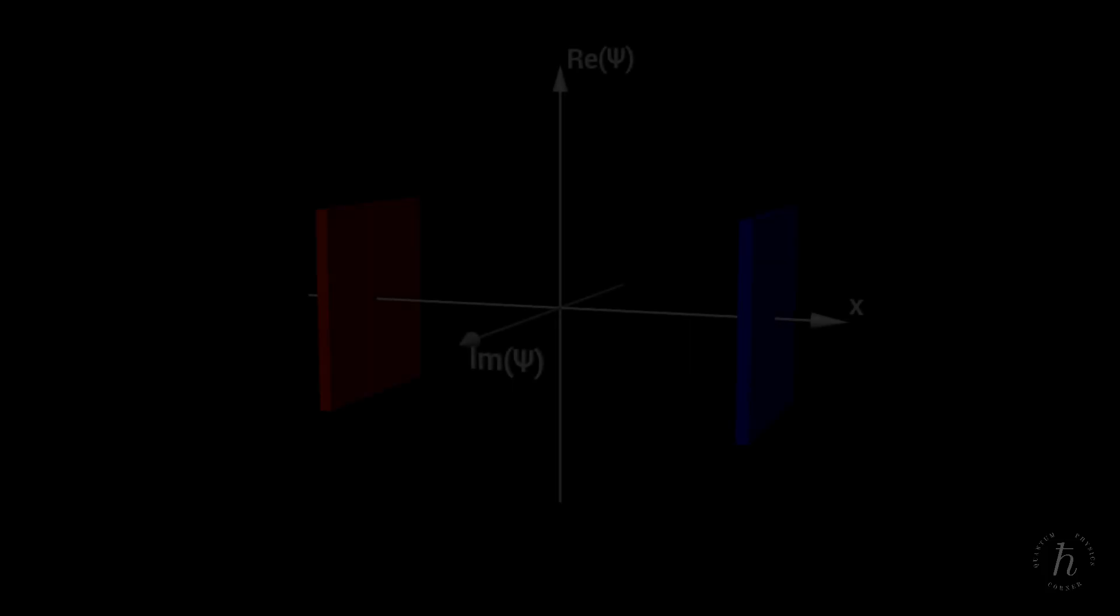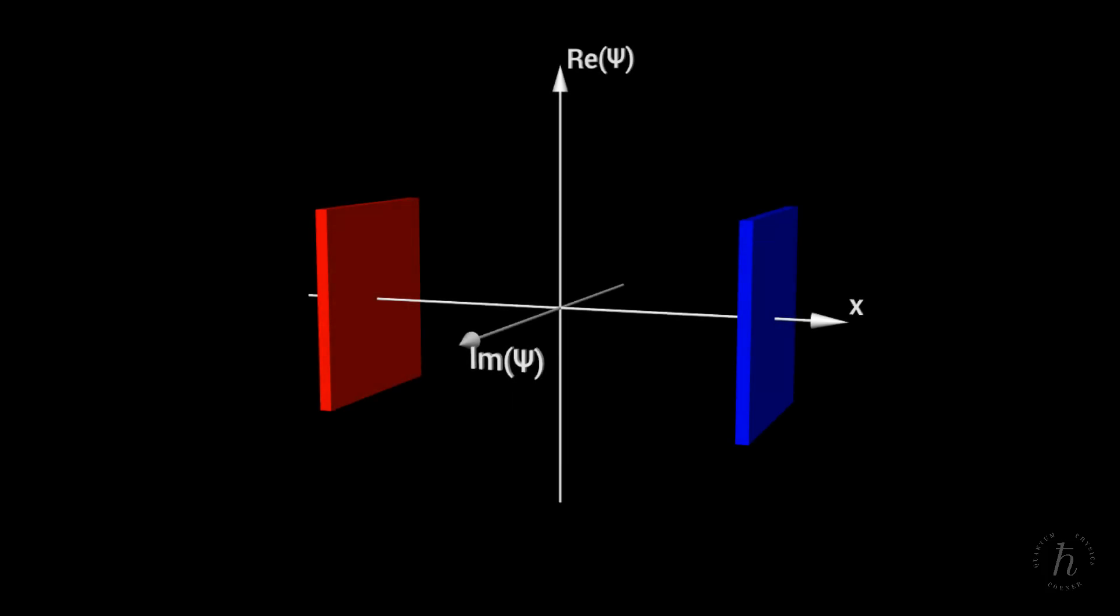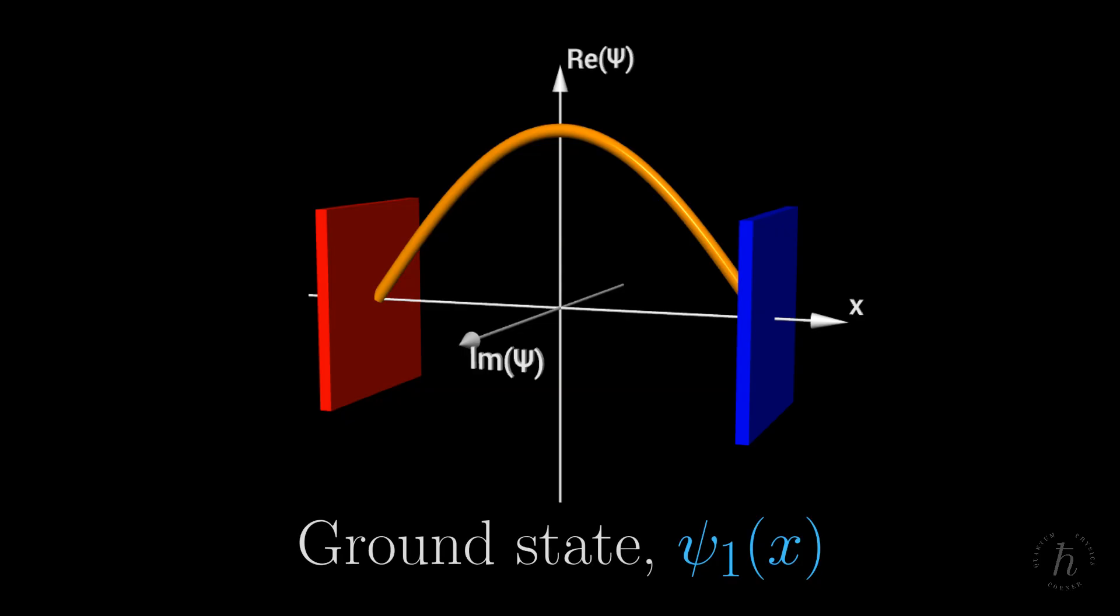Let's return to our coordinate system and use it to visualize the first two stationary states of the particle in the box. The lowest energy state, the so-called ground state, psi 1, corresponds to half a period of a sinusoidal wave that vanishes at the walls. It's usually taken to be purely real.